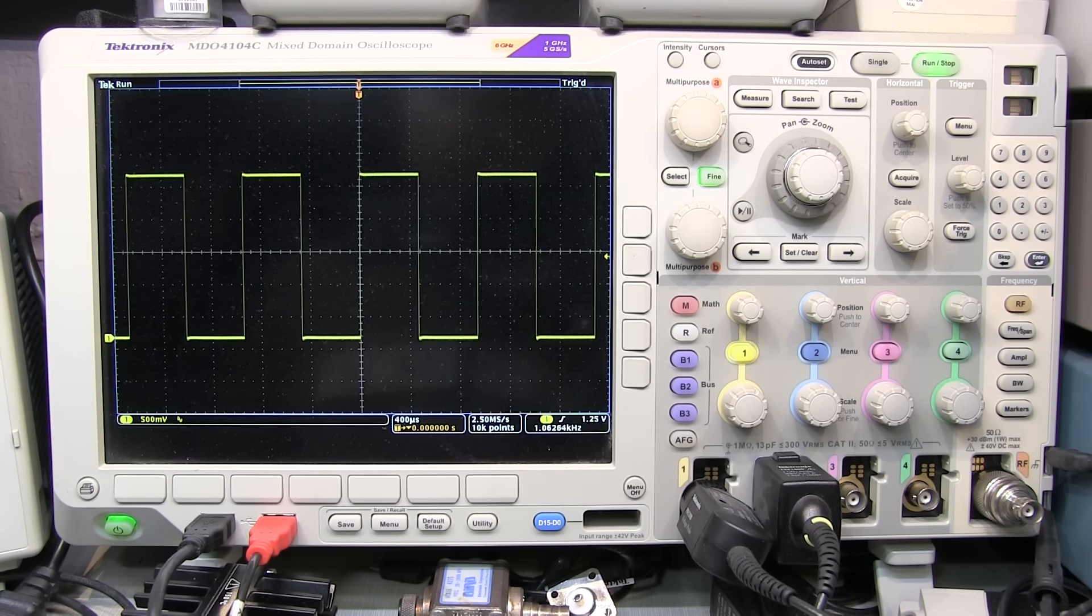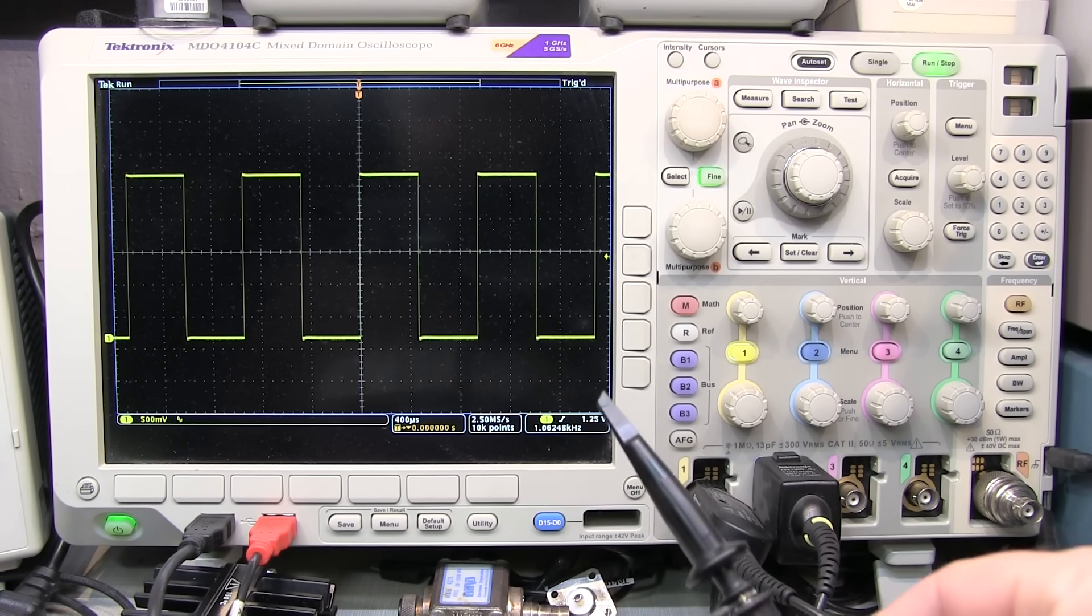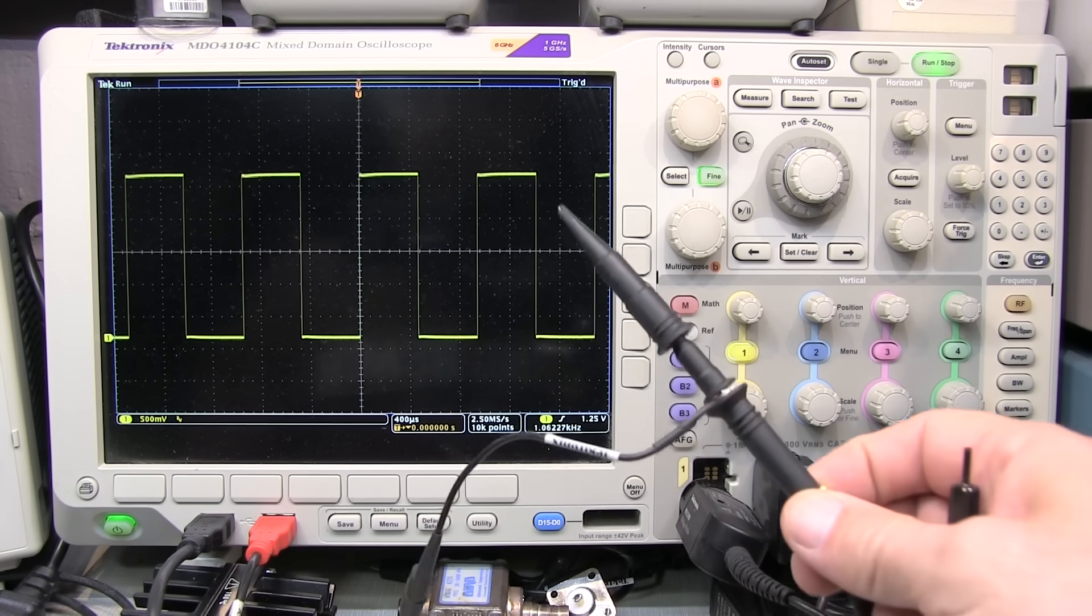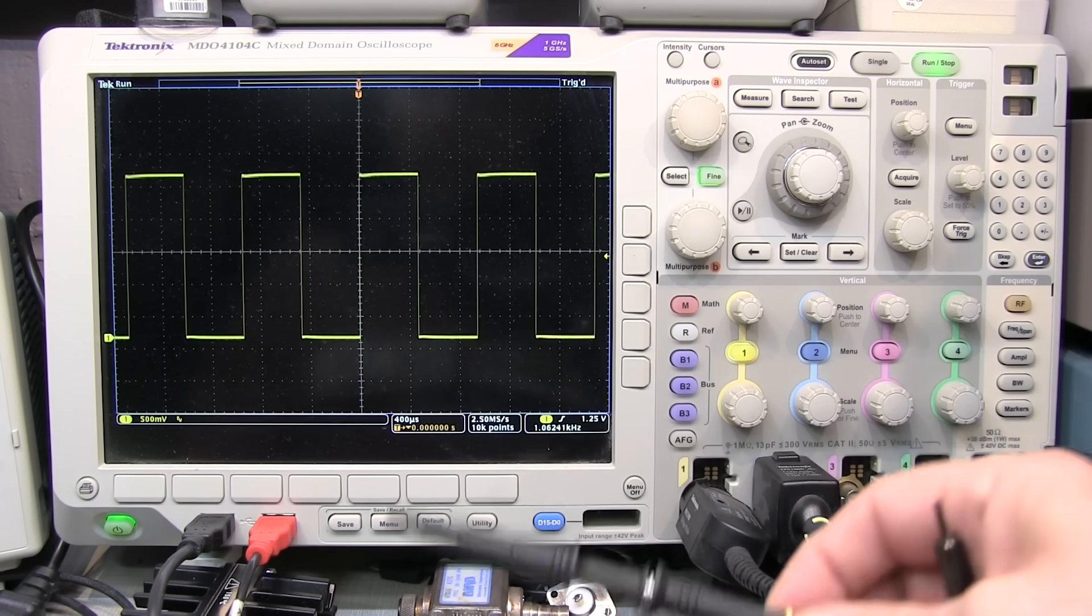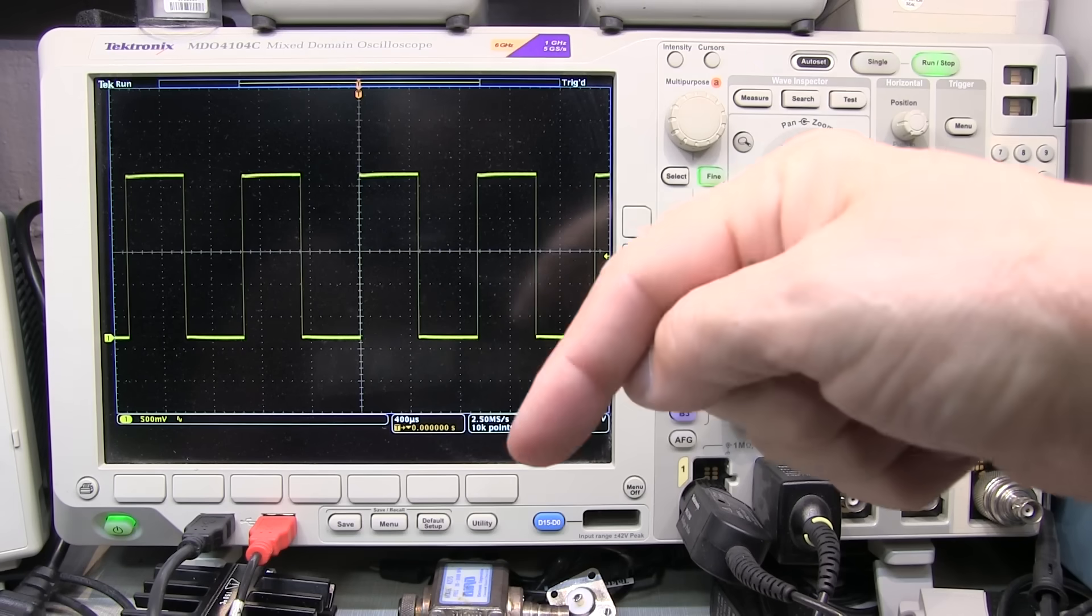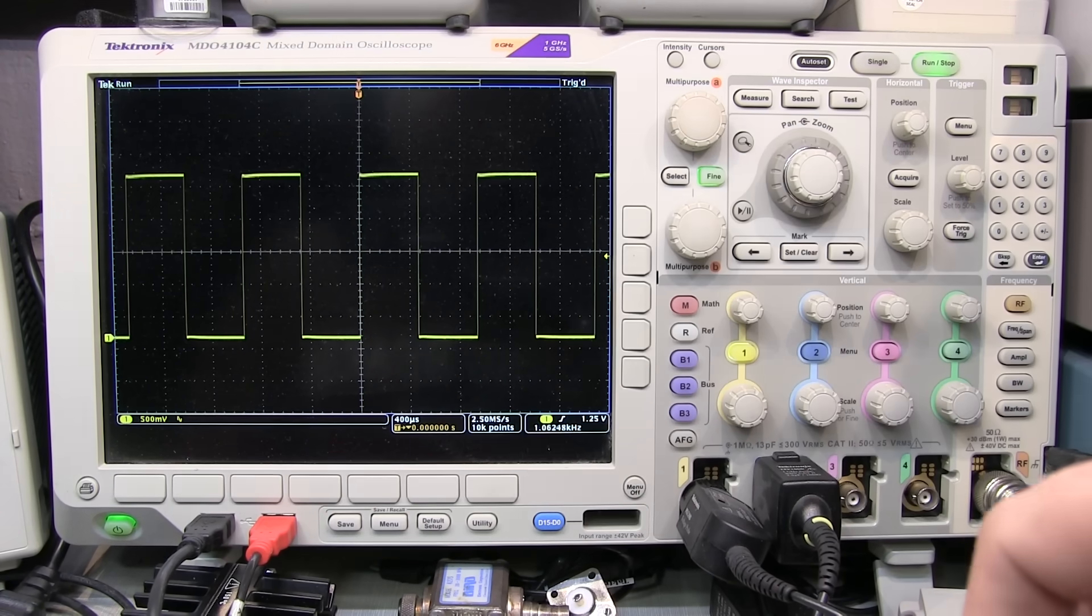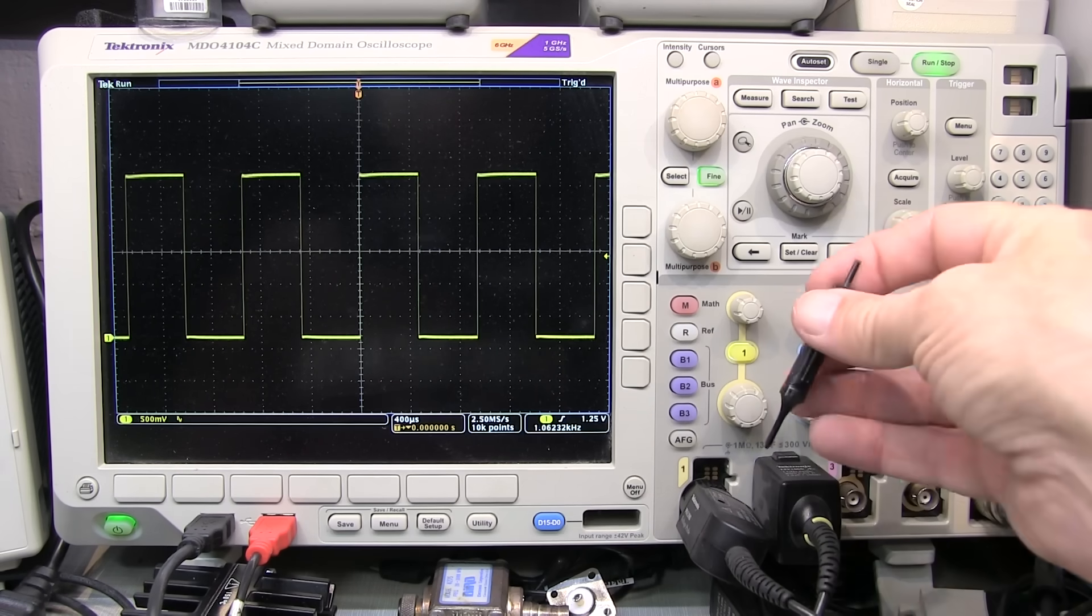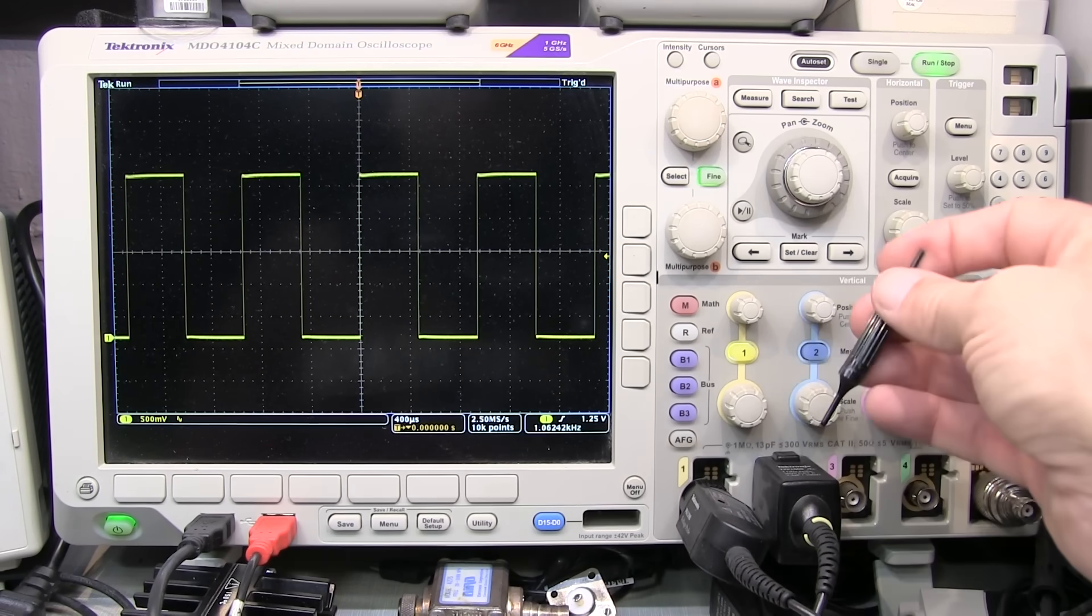The first set of tips has to do with some of the best practices with regard to probing your signals. Now the vast majority of time, we're using passive 10x probes to get signals into our scope. I've got a video linked down below that talks about the basics of 10x probes and why that's the case. Now one of the most important aspects of using a 10x probe is to ensure it's properly compensated for the scope you're using it on.